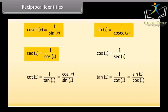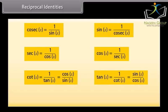Sec X is equal to 1 by cos X; cos X is equal to 1 by sec X. Cot X is equal to 1 by tan X; tan X is equal to 1 by cot X. These identities are the reciprocal identities.